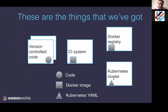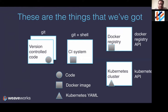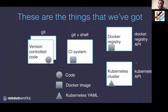The version control system uses Git as its API. The CI system is effectively a glorified way of saying: when there's a change to this Git repo, run these shell commands on it. The Docker registry speaks the Docker registry API. And the Kubernetes API is a different API for doing things like creating a deployment with a certain number of pods using specific container images.